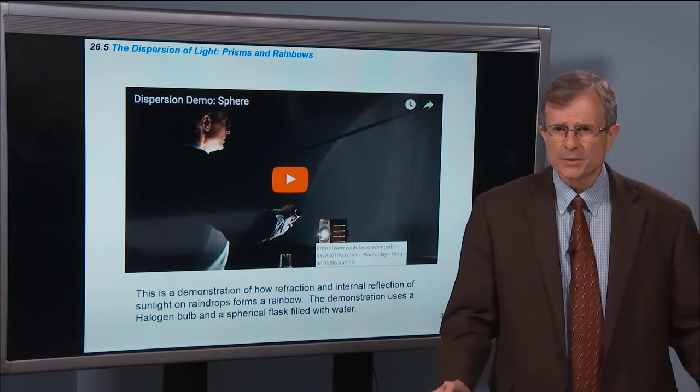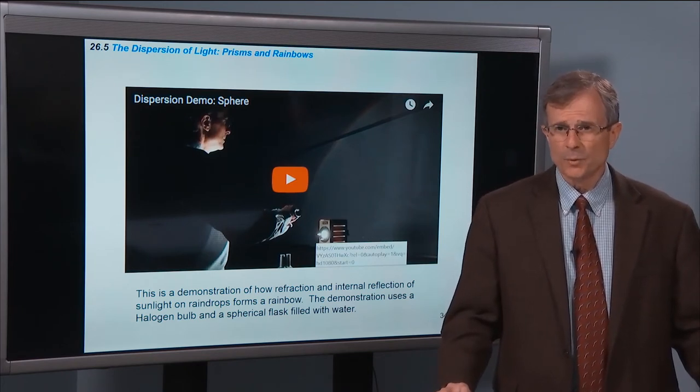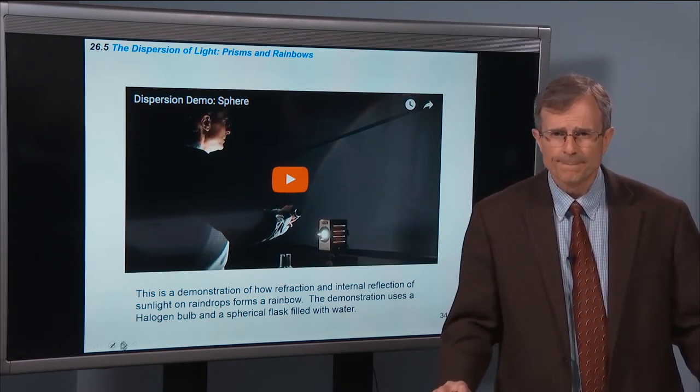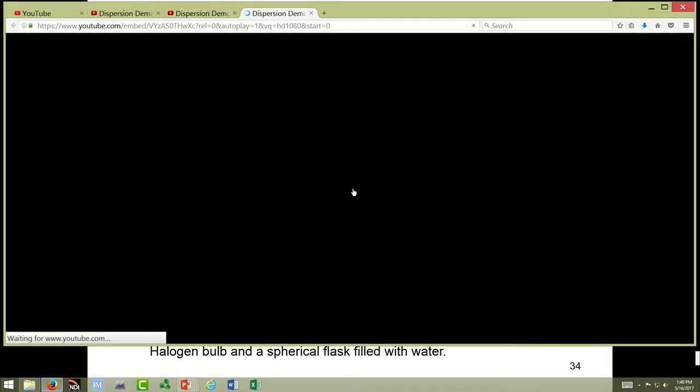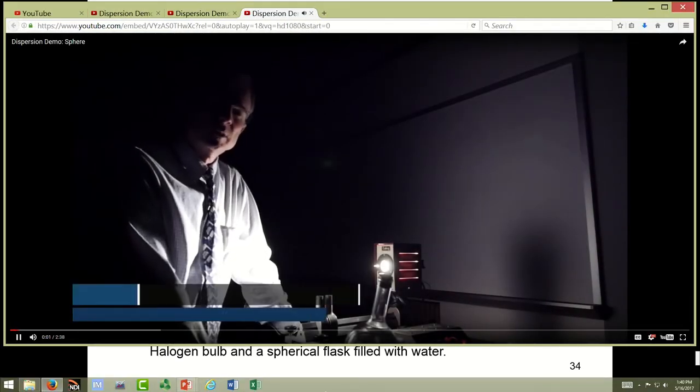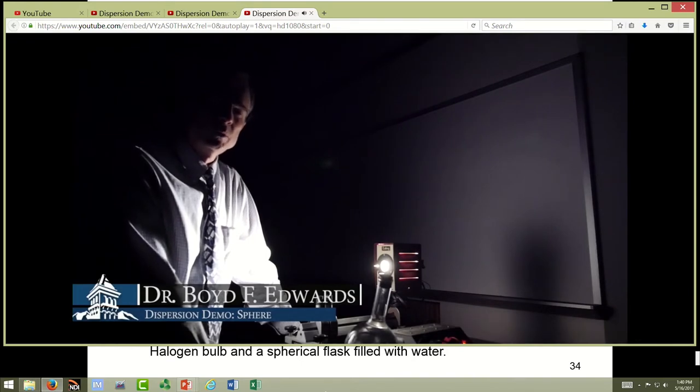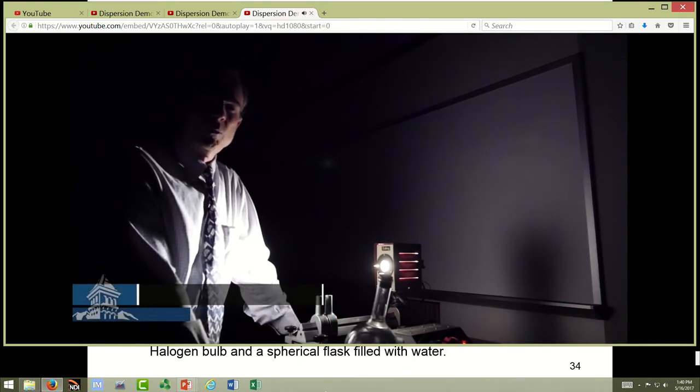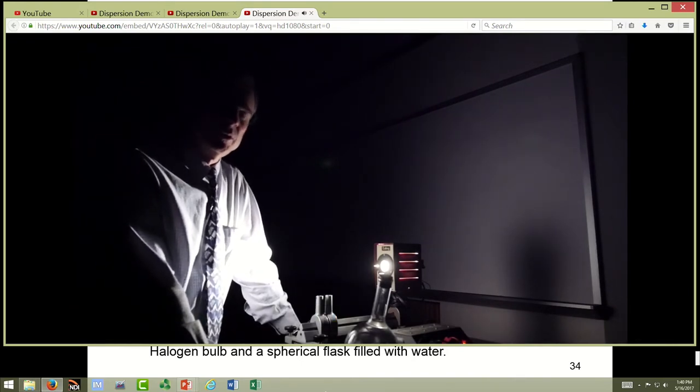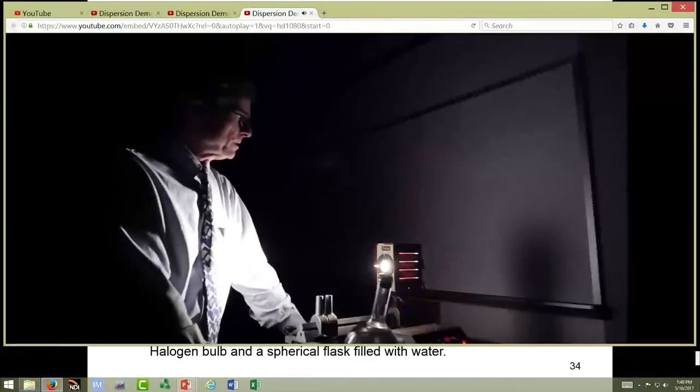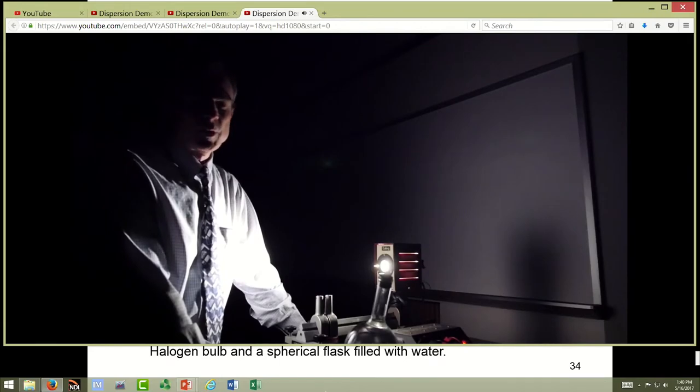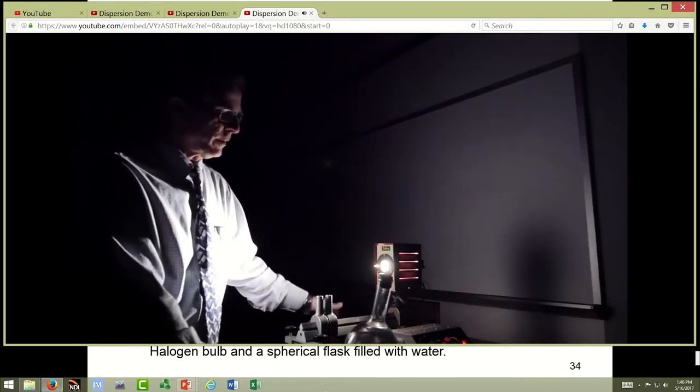So here's another demonstration of how rainbows form. This is a demonstration of the rainbow produced by water droplets in the sky during a rainstorm. The sun here is represented by this halogen bulb. It's a very powerful bulb.